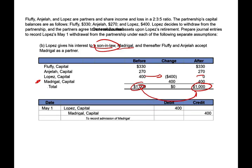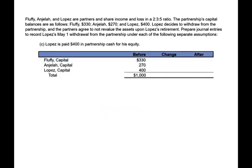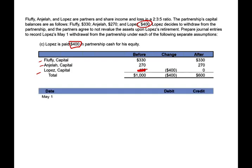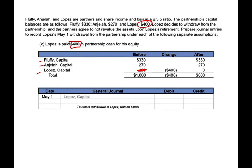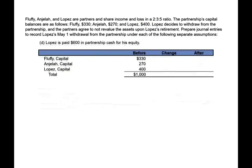Notice whether Lopez gave money, received money for his interest, or did not receive money — it's irrelevant as far as the partnership is concerned, because Lopez sold his partnership to a third party. Now Lopez is paid $400 for his interest. If he's paid $400 and he's worth $400, no one's getting anything. Lopez is going to be gone; what's left is $600. The entry is debit Lopez's account $400, credit cash $400, because the partnership did pay cash of $400. There is no bonus for Lopez, no bonus for the remaining partners.